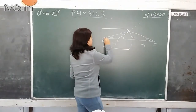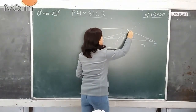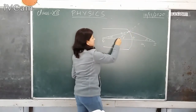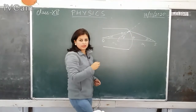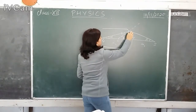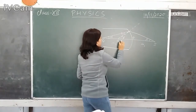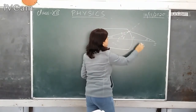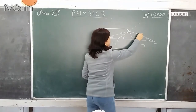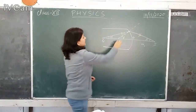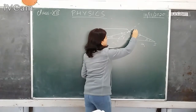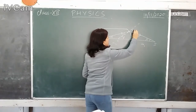The incident ray number one is incident here. When we draw the normal, it will pass through the center of curvature of the refracting surface. Now, since it is moving from a denser to a rarer medium, the refracted ray will move away from the normal. This angle is the angle of incidence I and this is the angle of refraction R.